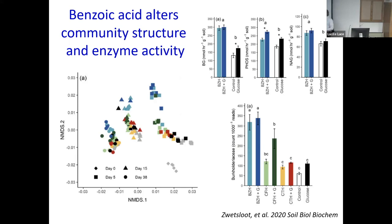We also see that the priming was driven by a change in community composition. In an ordination where each spot is a different community composition — spots close together mean similar communities — we started at a baseline, added different substrates, and over time saw those substrates cause a shift in the community. The benzoic acid and benzoic acid plus glucose really caused a different effect from everything else, and that different effect was associated with higher amounts of priming. As it turned out, a lot of this difference was affiliated with one group of organisms: Paraburkholderiaceae. They went through the roof.